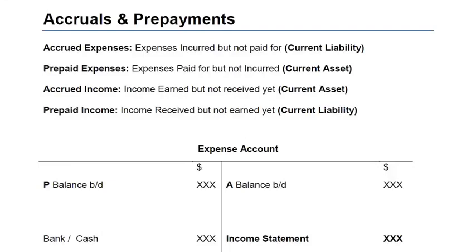My dear students, this is ARD. The topic of the day is accruals and prepayments. We will be starting with an expense account. Expenses are the outflows of the business — whatever we spend to maintain or run the business are expenses. Now expenses can be accrued, owing, or prepaid. Now what does this mean?